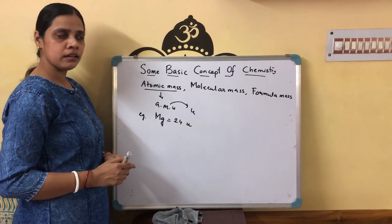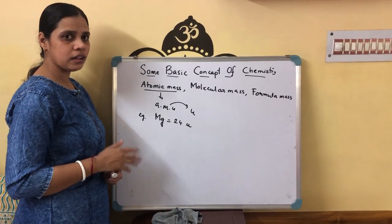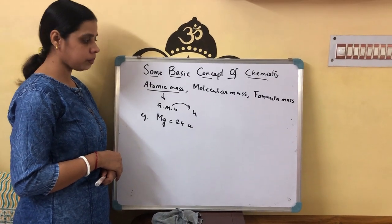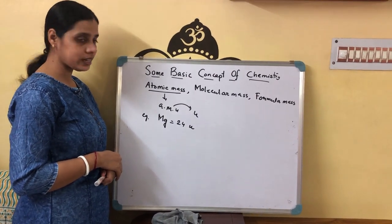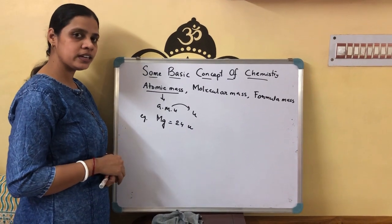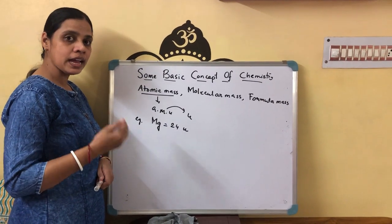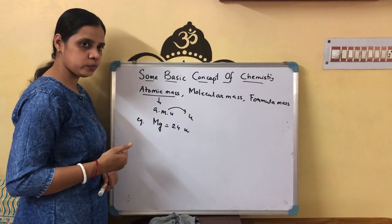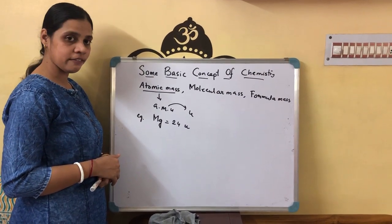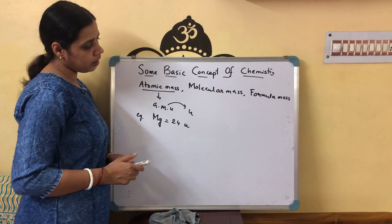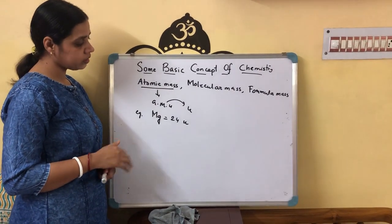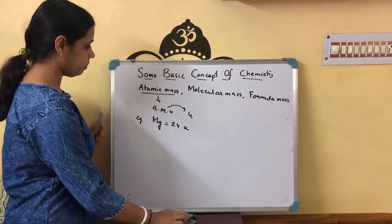Now, some elements have several isotopes. For this type of element, we calculate average atomic mass. Where do we calculate average atomic mass? For atoms which have several isotopes — like carbon, nitrogen, oxygen, and chlorine — for these we calculate average atomic mass.